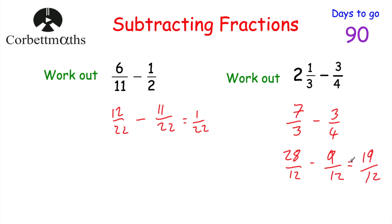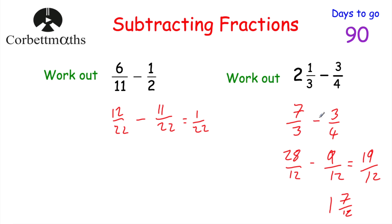Again, that's a top-heavy fraction, so let's change it into a mixed number. How many twelves go into 19? One, remainder seven. So the answer would be one and seven twelfths. So two and a third subtract three quarters equals one and seven twelfths. The main difference from adding is just that we're subtracting the numerators rather than adding them.